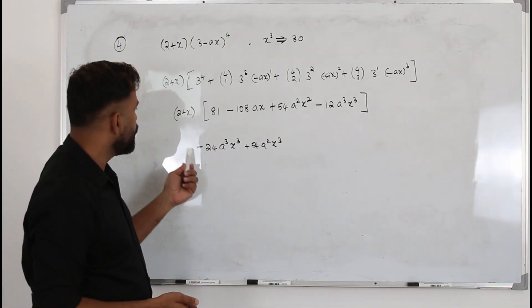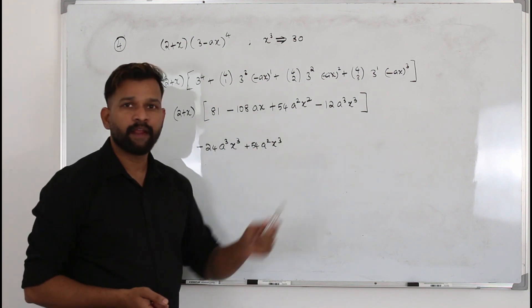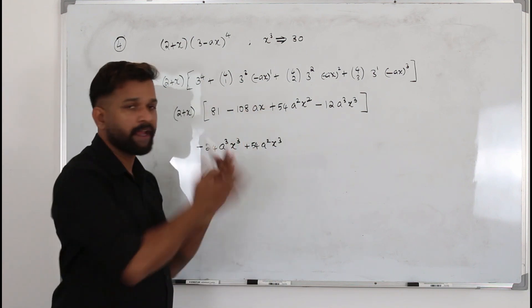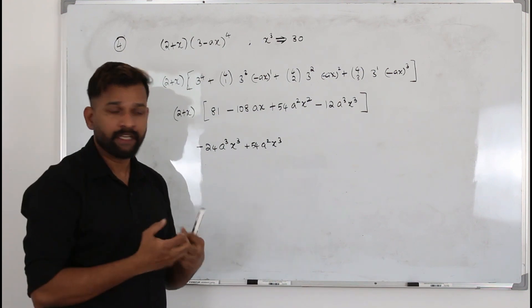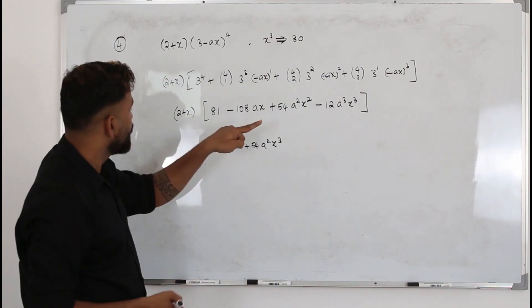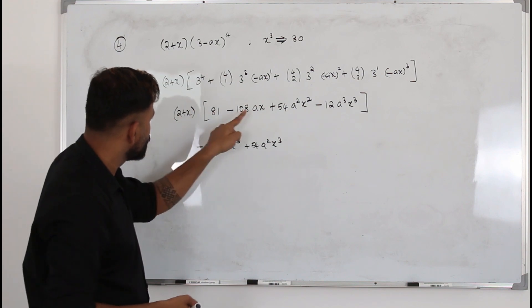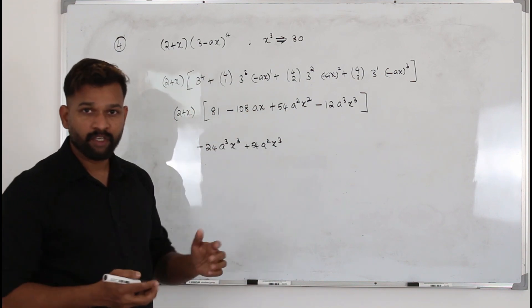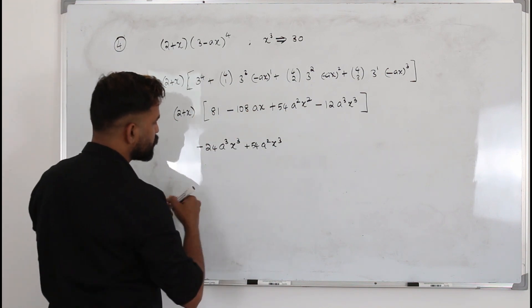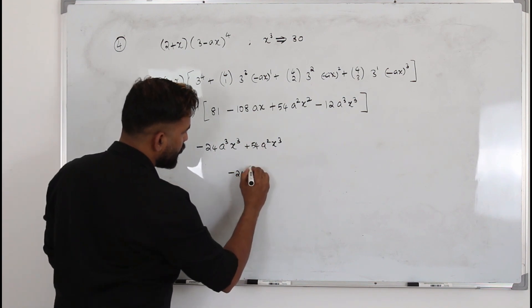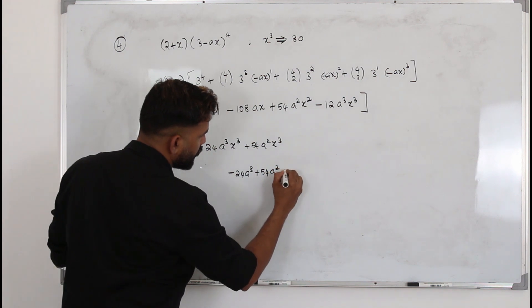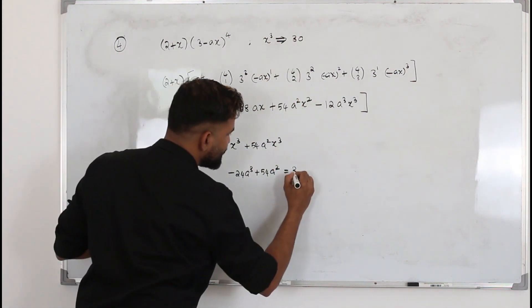So if you ask me, do I need to do this or can I just open the bracket? You are allowed to open the bracket and multiply all the terms. But you always need to find ways to save your time. So you don't need to take all the terms, just check carefully and take only the x³. Now, the coefficient of x³ is -24a³ + 54a². This is given as 30.